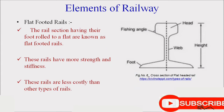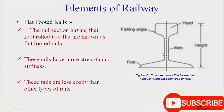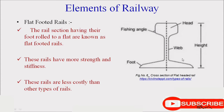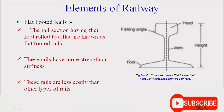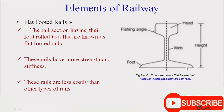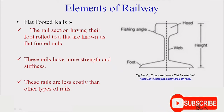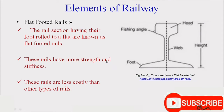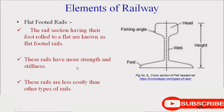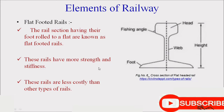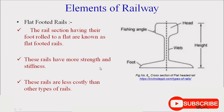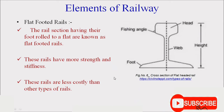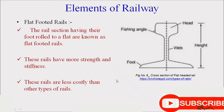Flat-footed rails have a flat lower part of the rail section, which is why they are called flat-footed rails. These rails have more strength and stiffness than other types of rails, and they are also less costly than other types.